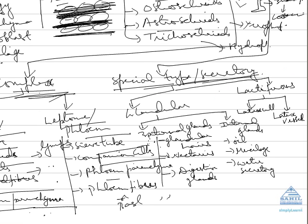The last type is special secretory tissue. If secretion is cellular, there are two types: glandular and lactiferous, which secretes latex. Latex cells are small secretory cells found in Ficus plants, while latex vessels are large secretory cells found in rubber plants and Euphorbia species. External glands include glandular hairs, nectaries, and digestive glands found in insectivorous plants. Internal glands, such as oil secretory cells, mucilage secretory cells, and water secretory structures, are found in pine trees.